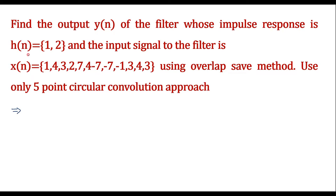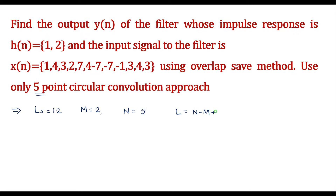Here the sequences x[n] and h[n] are given. We have to find the output of the filter. The length of x[n] is represented as ls which is equal to 12, as it has 12 samples. The length of h[n] is represented as m which is equal to 2. Since we are using 5-point circular convolution, N equals 5. With this we calculate L = N - m + 1 = 5 - 2 + 1, so L is equal to 4.